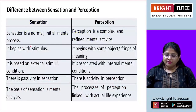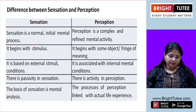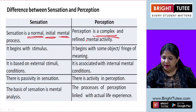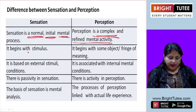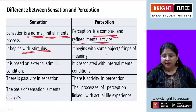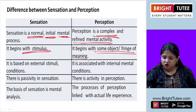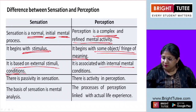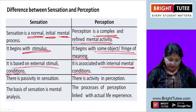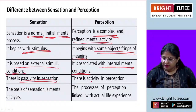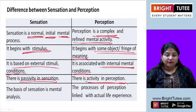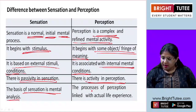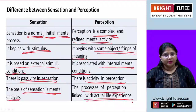Let us look at the differences between sensation and perception. Sensation is a normal initial mental process, whereas perception is a complex and refined mental activity. Sensation begins with a stimulus; perception begins with some object or fringe of meaning. Sensation is based on external stimuli and conditions, whereas perception is associated with internal mental conditions. There is passivity in sensation, whereas there is activity in perception. The basis of sensation is mental analysis, while the process of perception is linked with actual life experiences.